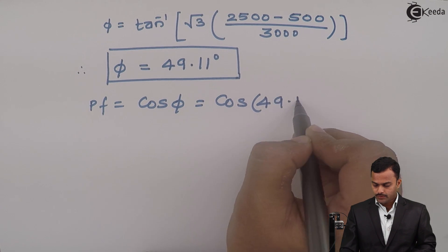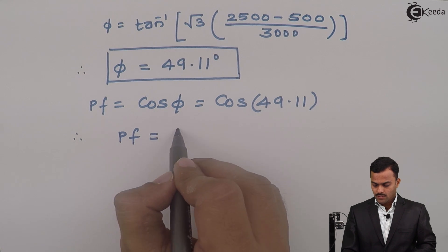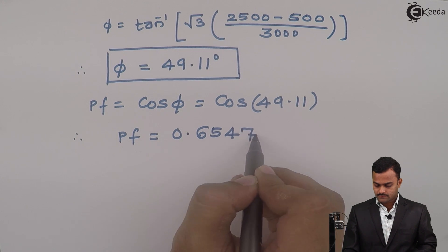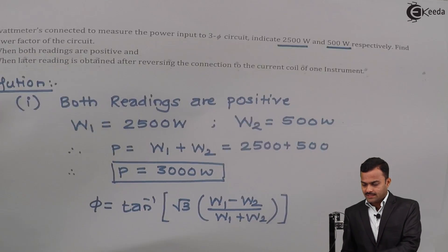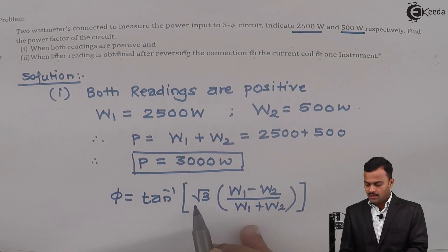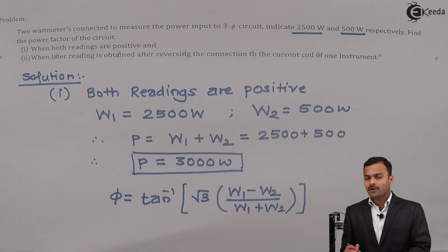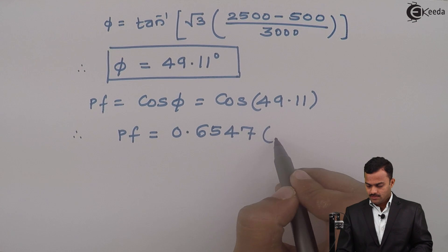So if you solve, you will get power factor as 0.6547. Now we have to determine what is the nature of it. We have seen that whenever I use this formula having no negative sign, I have already assumed the load as inductive. So for inductive load, power factor is lagging. So cos φ is 0.6547, nature is lagging.